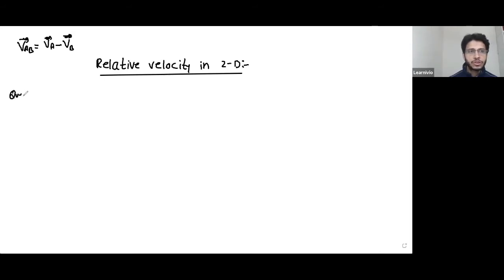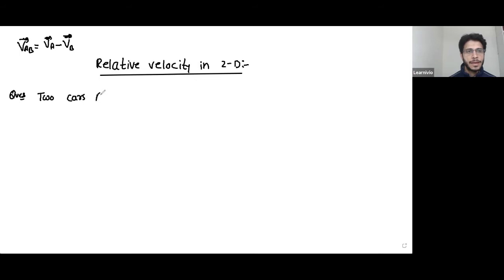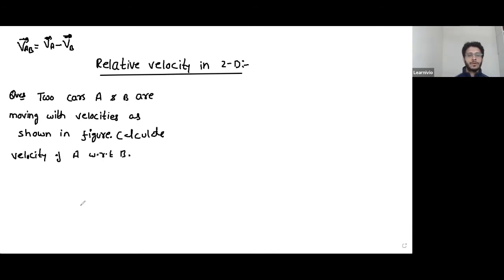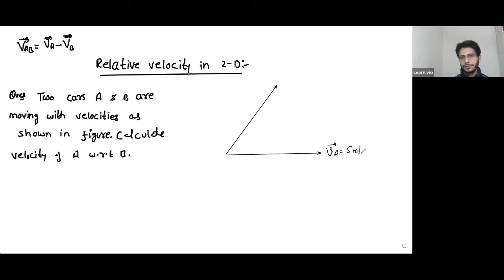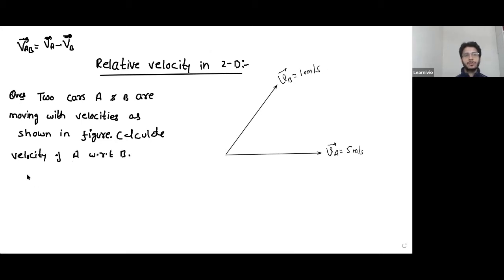There is no special formula for relative velocity in 2D — it is just VAB equals VA minus VB, and the rest is vector subtraction. Let's start with the first question: two cars A and B. VA is 5 m/s, and VB is 10 m/s. This example will clear all steps involved in calculating relative velocity in 2D.